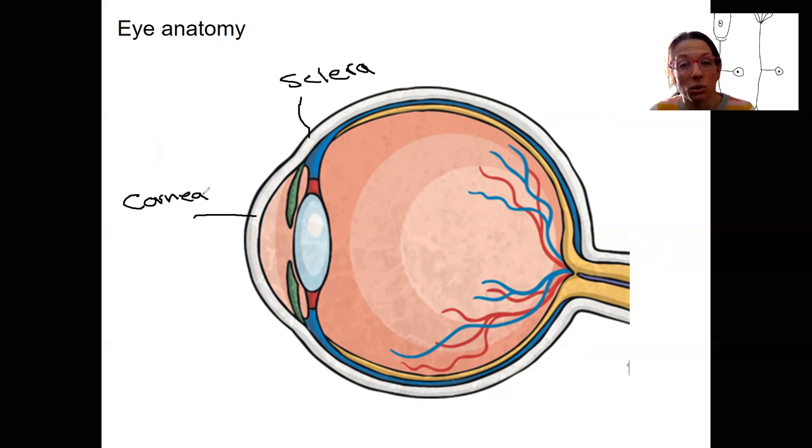It heals quickly. So if you scratch your eye, it really hurts, but it also heals. The sclera then is around the rest of the eye. This is actually the white of your eye as well.